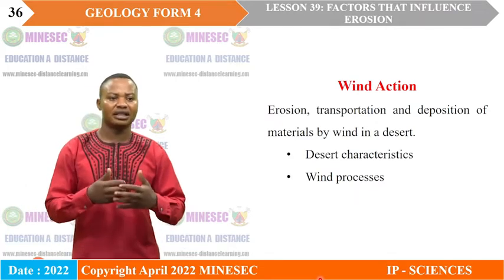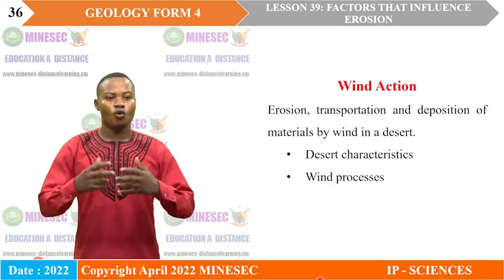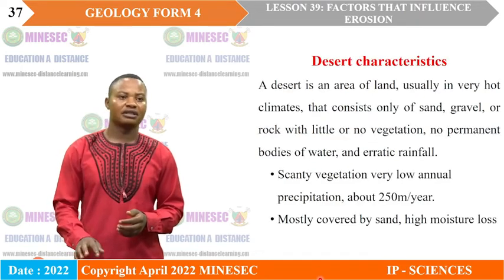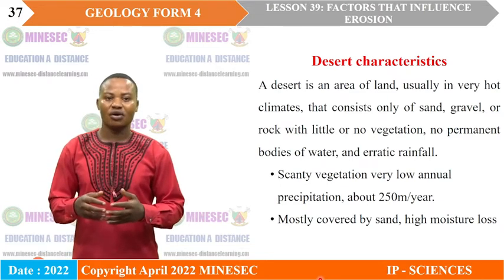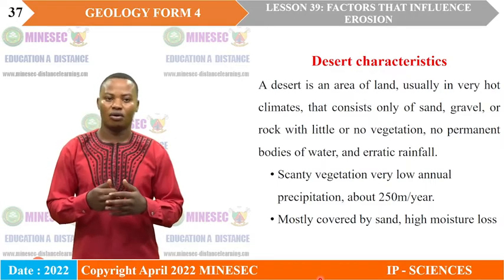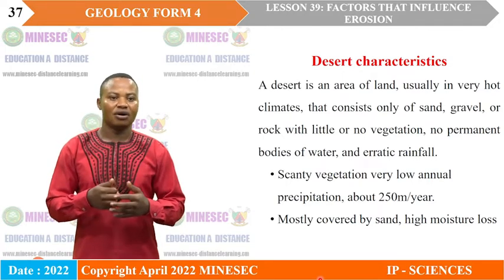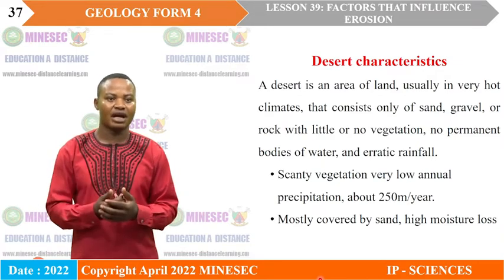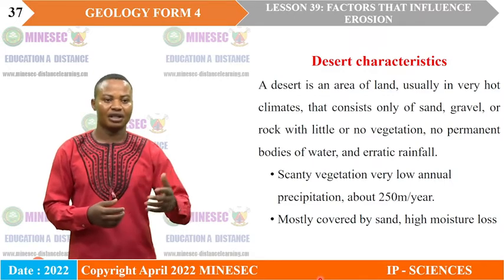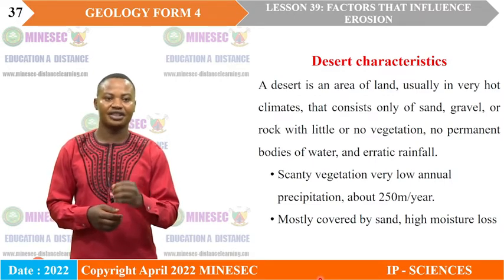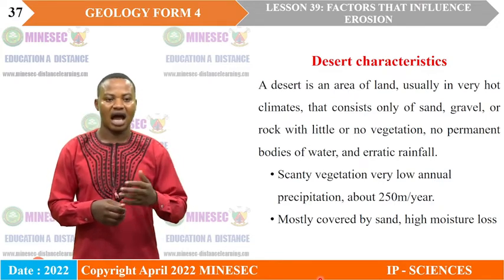Wind action is dominant in the desert. A desert is an area of land, usually very hot, that consists only of sand, gravel, or rock, with little or no vegetation, no permanent water body, and scarcity of precipitation. A desert can equally be defined as an environment where the rate of evaporation exceeds the rate of precipitation. Desert characteristics include: scanty vegetation, low annual precipitation, mostly covered by sand, and high moisture loss.